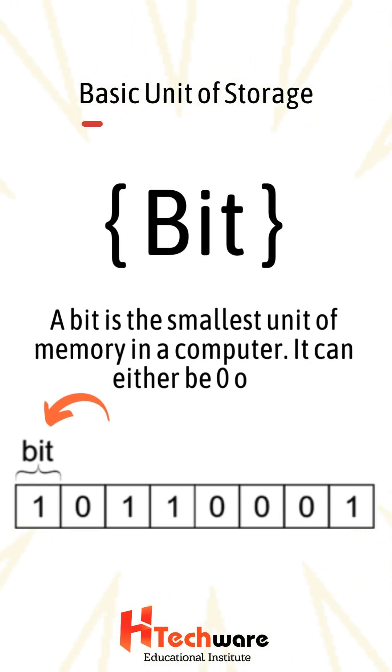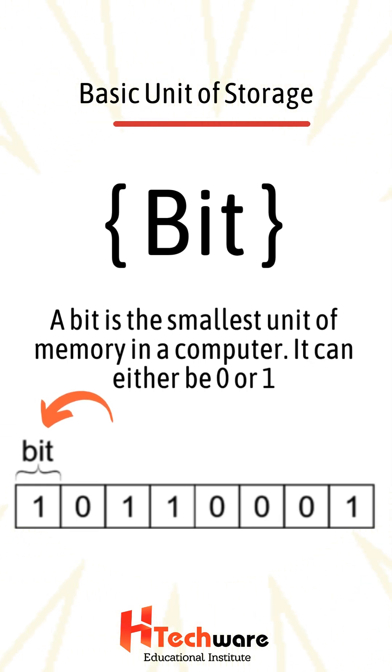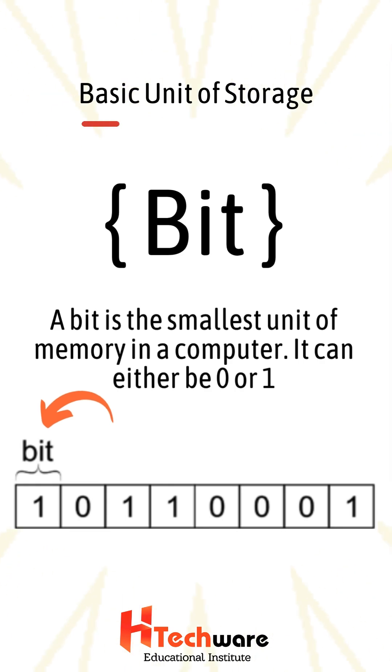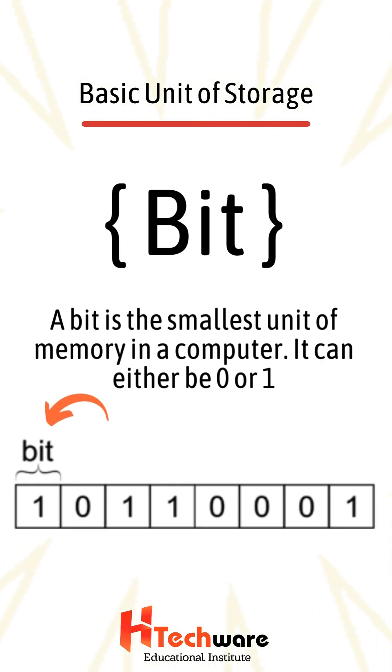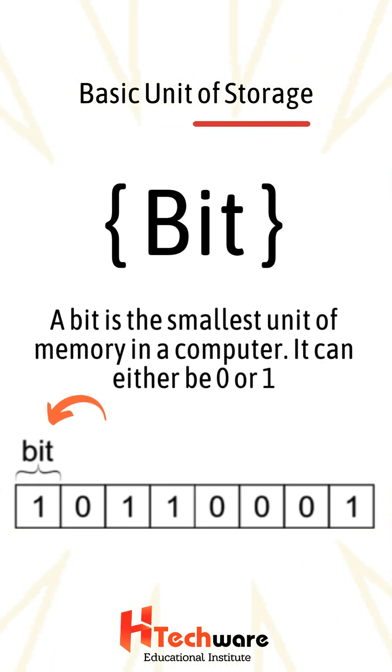It can either be 0 or 1. As you can see in the diagram, the first block consists of one number, which is known as a bit unit.